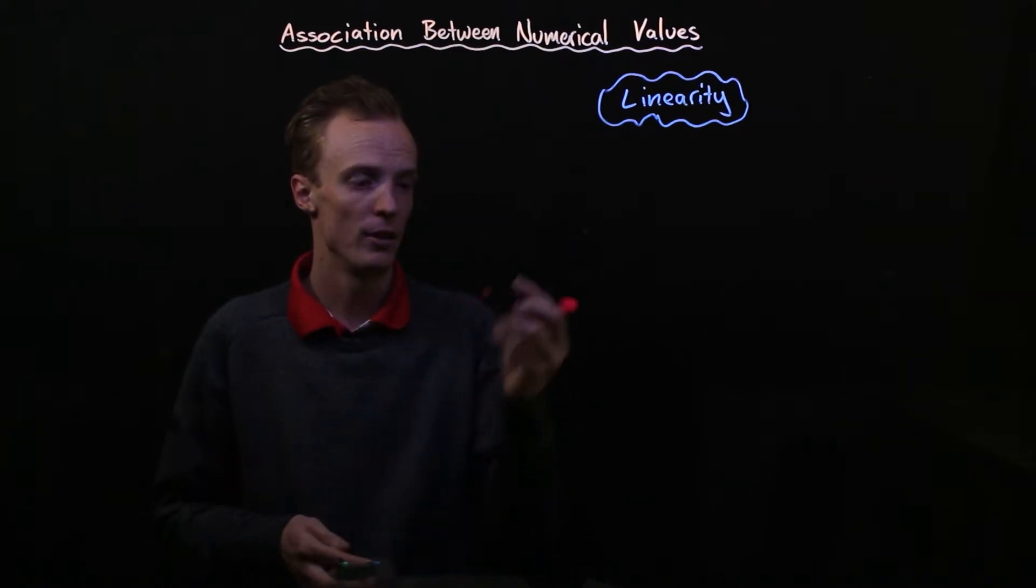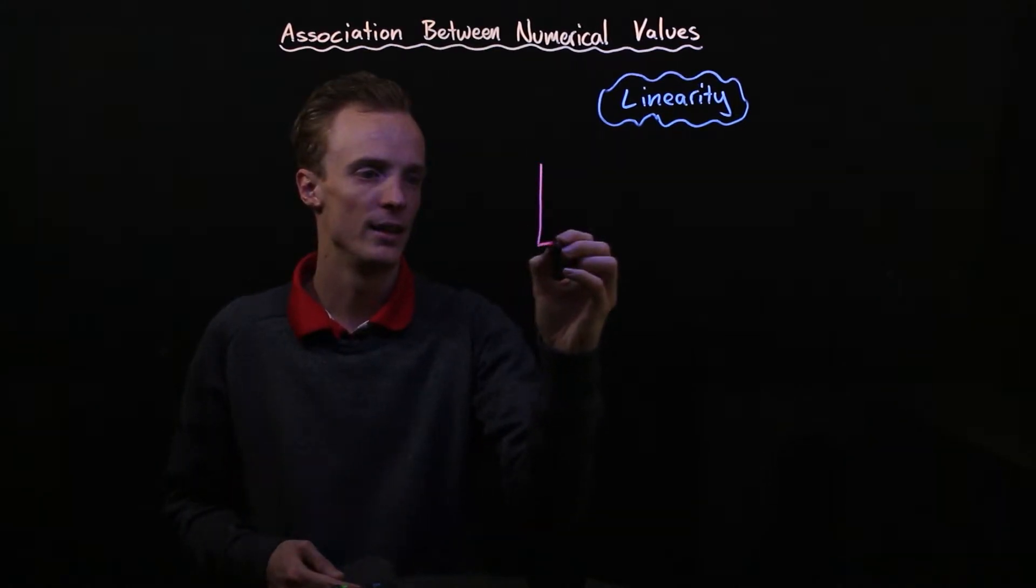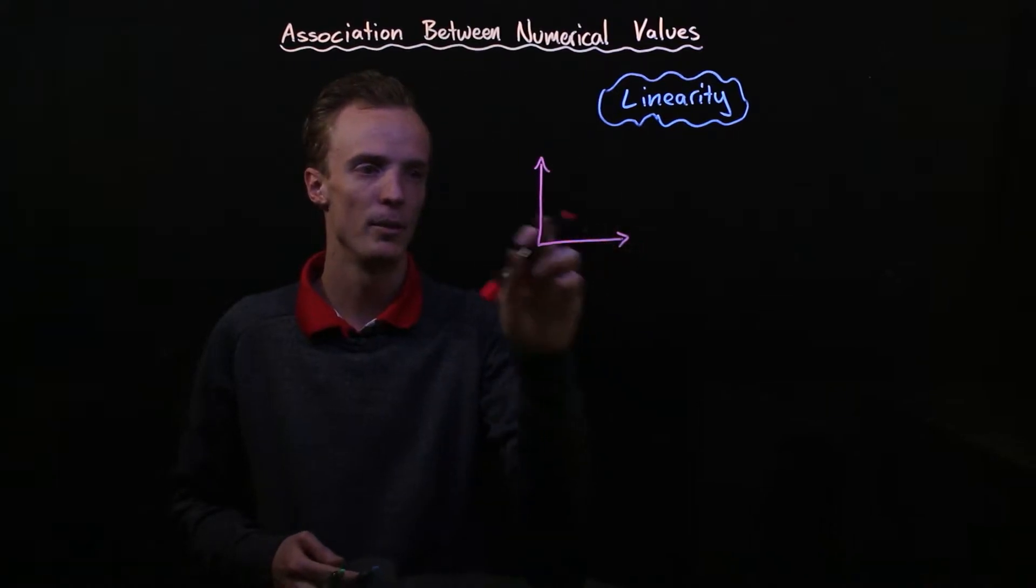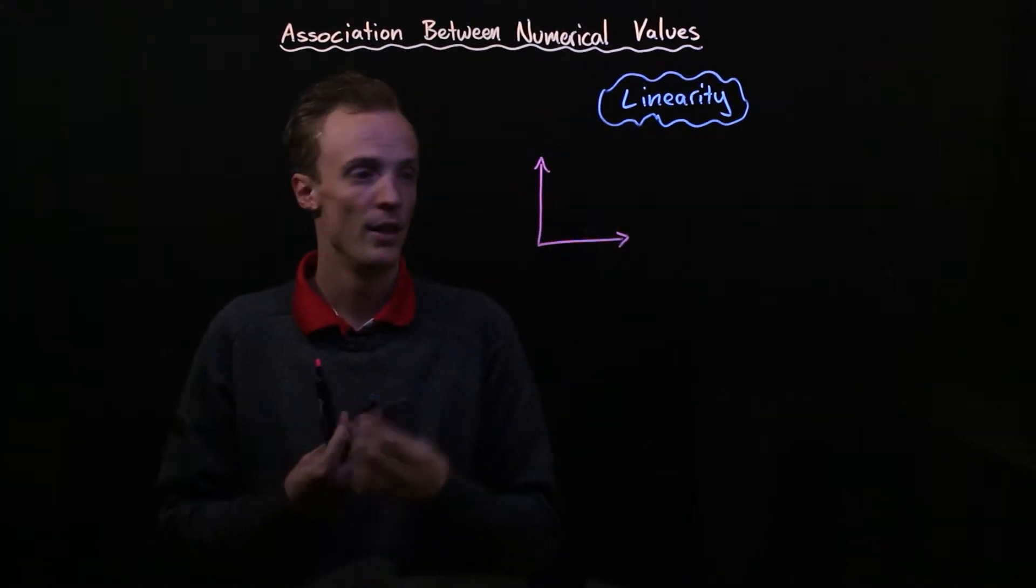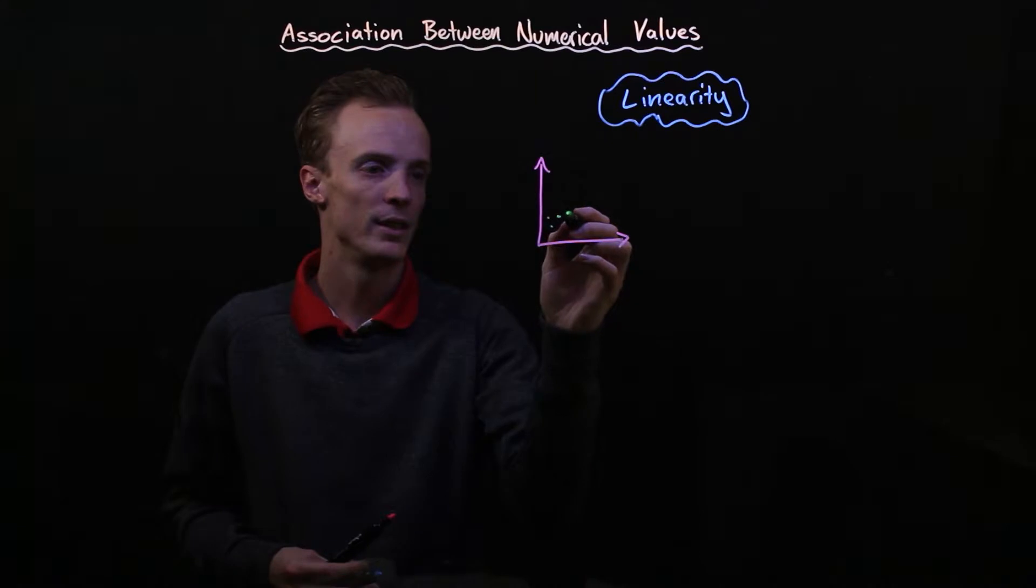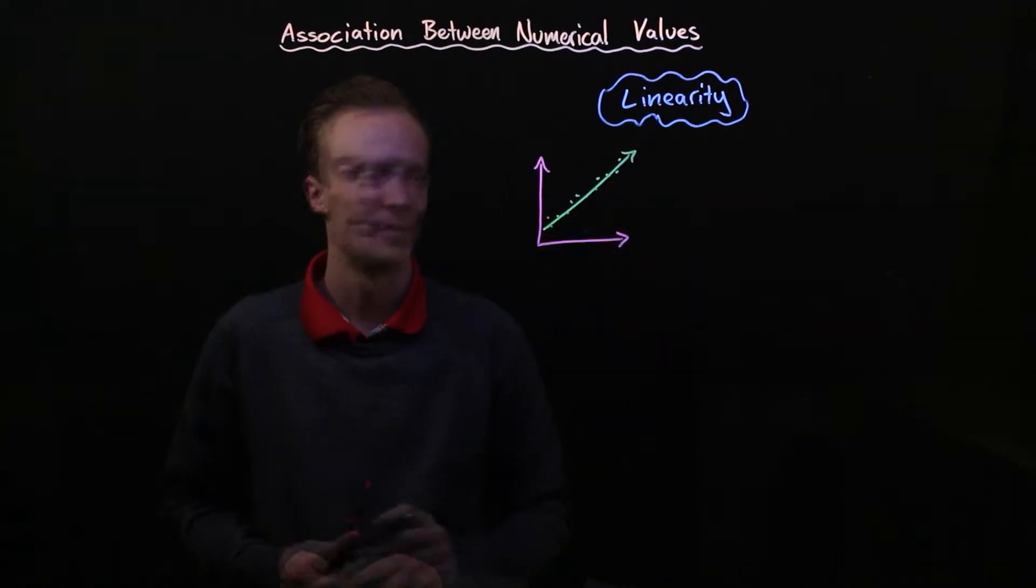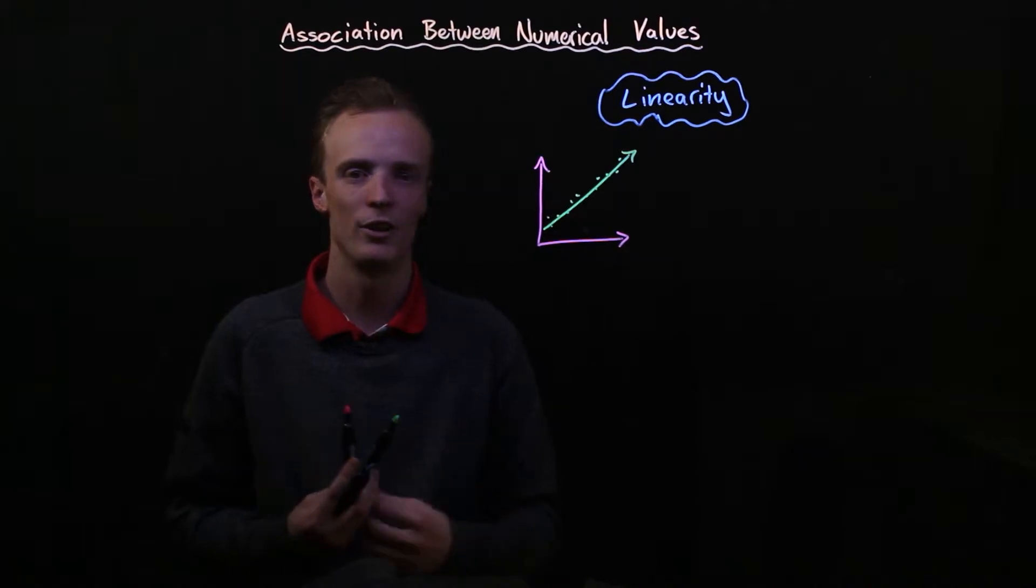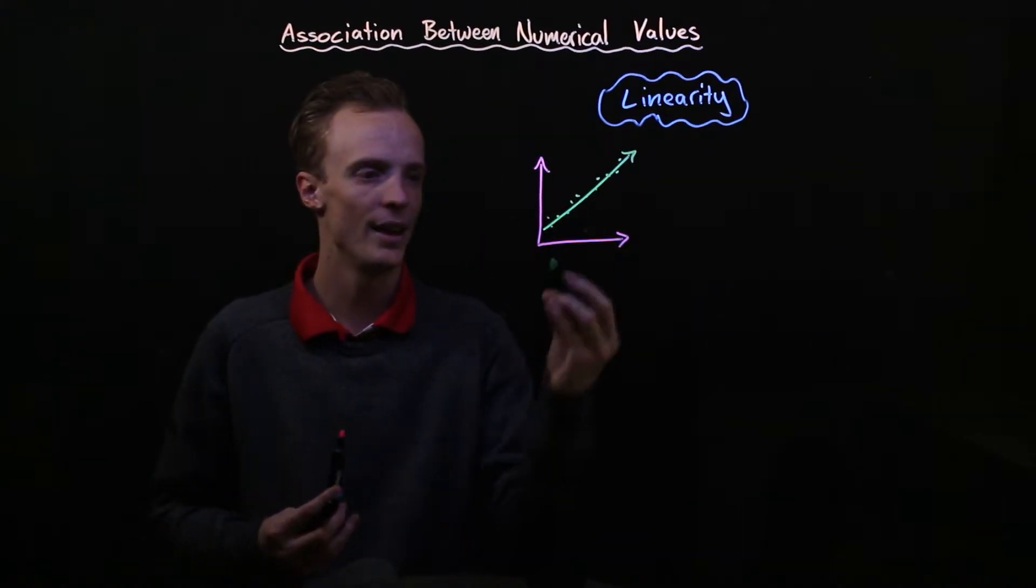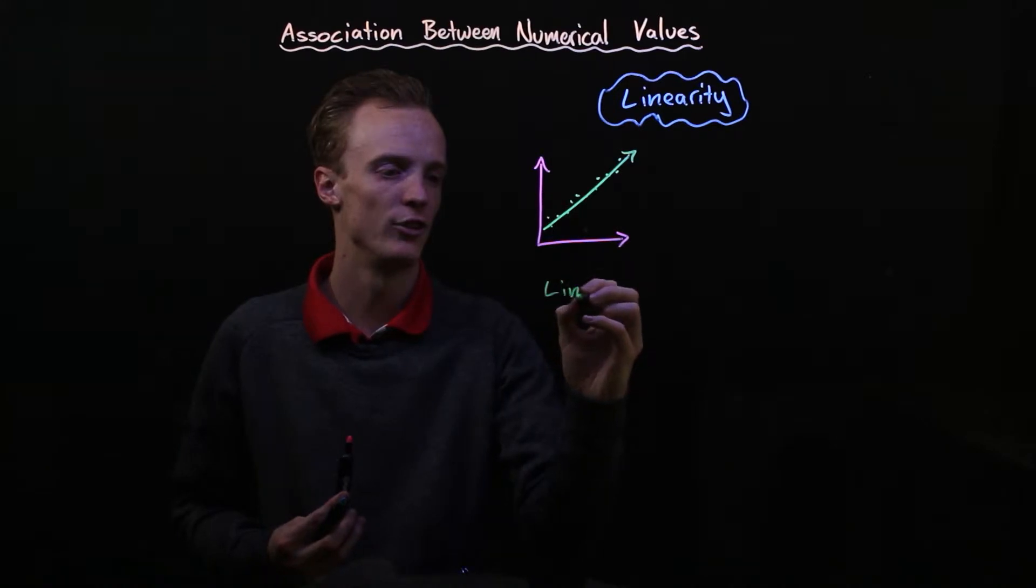In terms of the graph what that will mean is between our explanatory variable and our response variable the data points will tend to follow a straight line and we describe the association between our explanatory and response variables as a linear relationship.